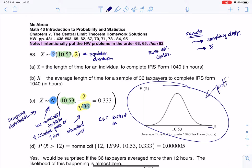You see that I've labeled my x-bar axis. I put 10.53 under the peak, and if I wanted to I could make these standard deviations - I could go up 0.333 and down 0.333, or about a third of an hour or 20 minutes, if I wanted to scale out my x-bar axis.